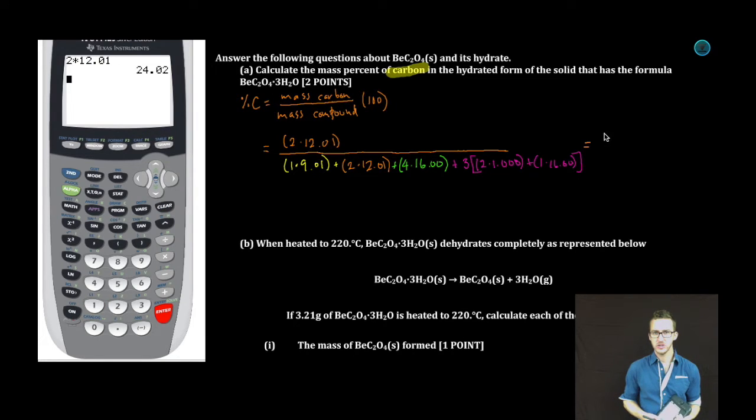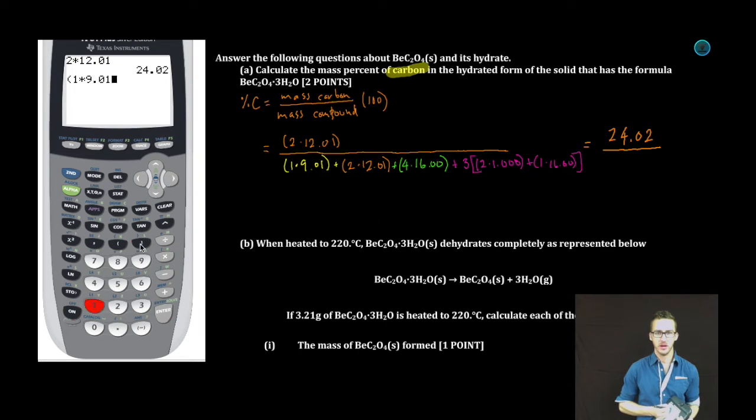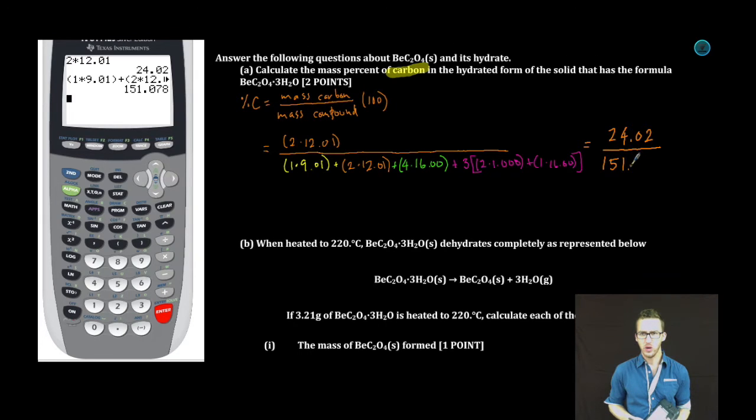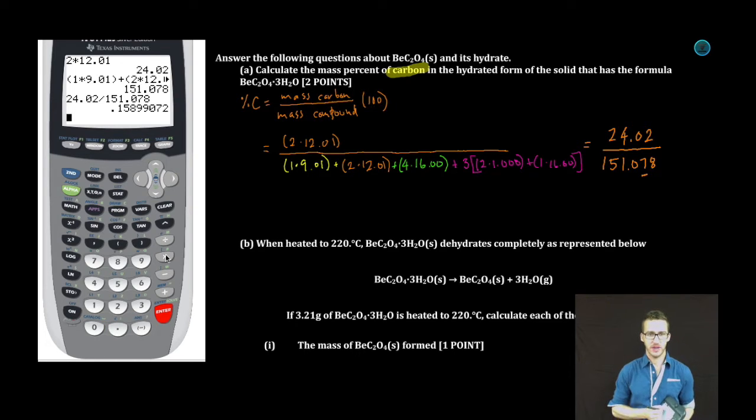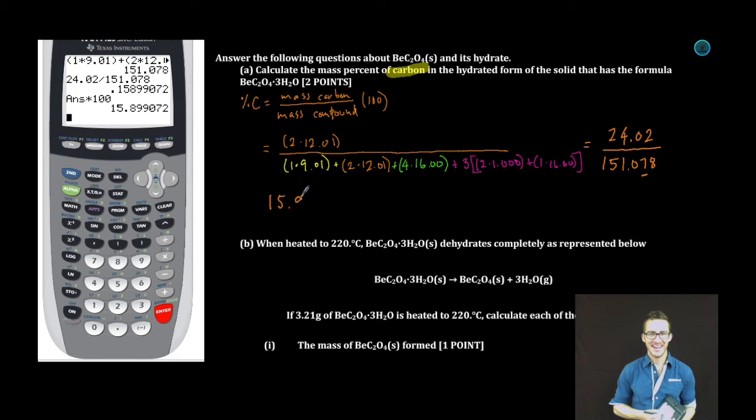So our numerator gets us to 24.02. In the denominator, hold on to your hats. The molar mass of this hydrated compound, 151.078. And as I keep in mind the rules for sig figs, I'm just going to remind myself where I should round for my final answer. Now I'm going to take 24.02 divided by 151.078. Don't forget to multiply that by 100. As I think about sig figs here, I've got four and what should be five sig figs. So my final answer is going to have just four, which gets us to 15.90% carbon. Two points.